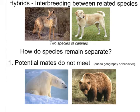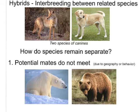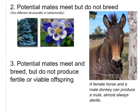So how do species remain separate? We have about three different situations to talk about. One: potential mates do not meet, either due to geography or due to behavior — perhaps one species is nocturnal and another is not, so they simply do not meet. Here's an example where mates do not meet; they are geographically not in the same location, and there has never been a reported instance where they have met and produced offspring in the wild, although it has happened in captivity. Another reason: potential mates meet but they do not breed — either they are structurally or behaviorally too different. For example, a blue spruce and a columbine are in the same location, but they will not breed to produce offspring.